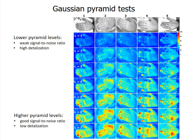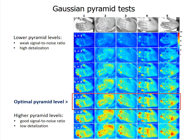We tested how the number of Gaussian pyramid levels affects the quality of rPPG maps. Higher pyramid levels lead to increased amplification of low spatial components, so the microcirculation signal rises above the camera quantization noise. While lower pyramid levels give higher map detail, higher pyramid levels lead to over-blurring. We consider that pyramid level 5 is adequate for optimal sensitivity and detail.